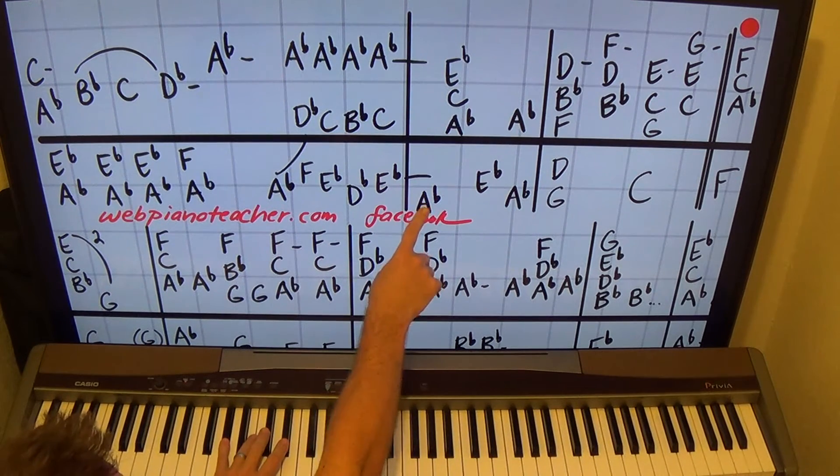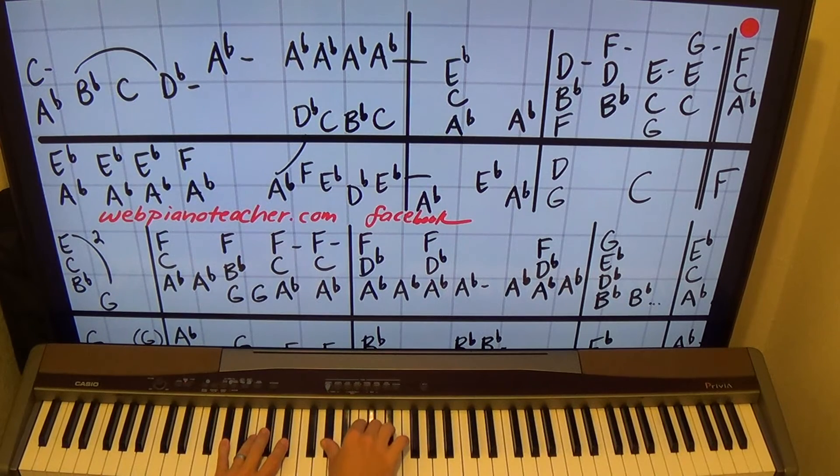Okay, and then you'll immediately play the A-flat there, and then A-flat, C, E-flat in the right hand. And then E-flat on the left, and then A-flat on both hands.